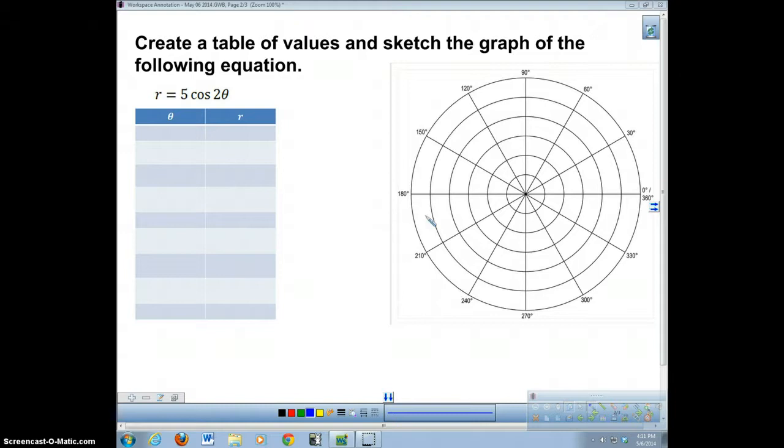I want you to be able to at least sketch the graph using your own values here. We know that this right here is a polar graph and it's given with a rose because a rose has a number inside of the cosine multiplied by the theta.